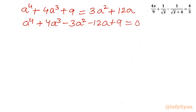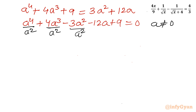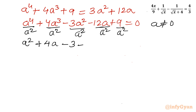Since a is always positive and nonzero, we can divide the entire equation by a squared. This gives: a squared plus 4a minus 3 minus 12 over a plus 9 over a squared equal to 0.